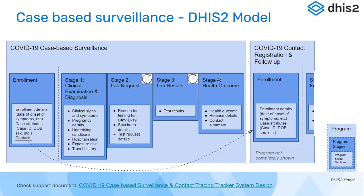Now, how was the workflow converted into a DHIS2 data model? The first step was enrollment, which captured basic registration details such as date of symptom onset, case attributes like case ID, date of birth, sex, and number of contacts recalled in the past few days. Then there were four stages — both repeatable and non-repeatable. Non-repeatable events happen only once; repeatable events mean a service can be given to the patient multiple times, creating different instances depending on the patient.